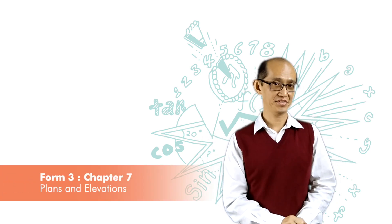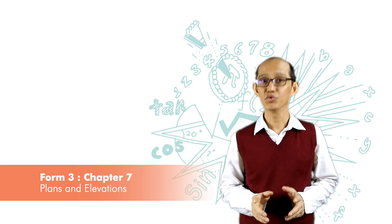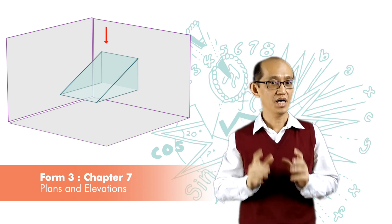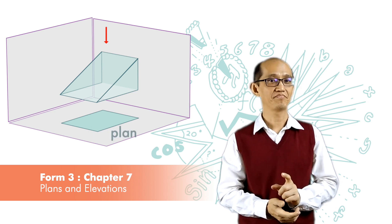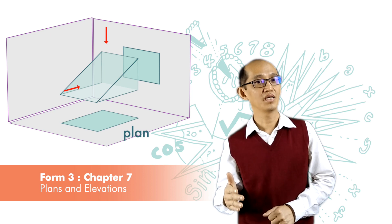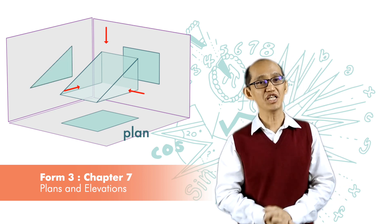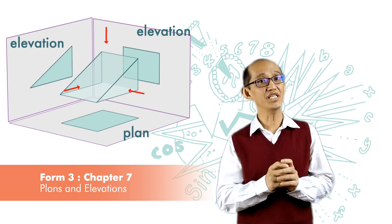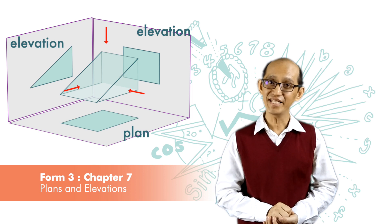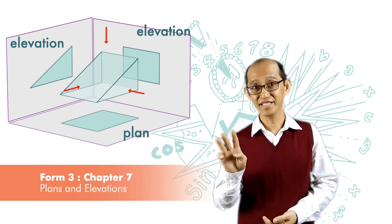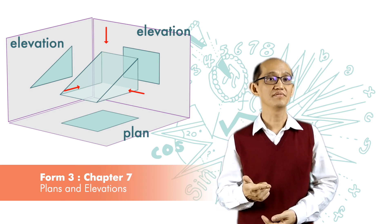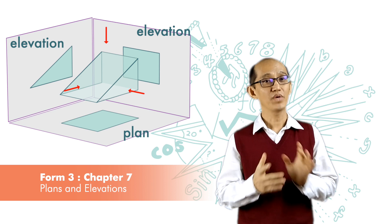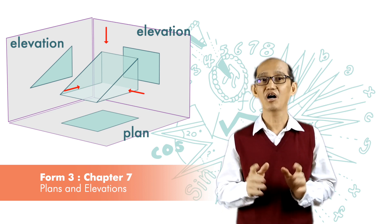We have learned orthogonal projections and today we are going into plan and elevation. When we look from the top, the orthogonal projection we get is called a plan. When we look from the front or the side, the orthogonal projections we get are called elevations. To represent a 3D object in 2D drawings, we need at least three orthogonal projections, and we are going to see how we link these three orthogonal projections together.